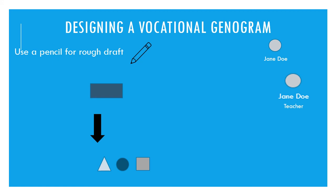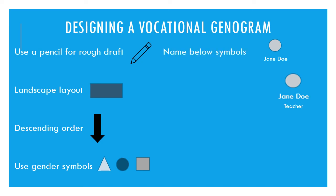Designing a vocational genogram can be simple and should be approached from a rough draft mindset, which is why using pencil or chalk is ideal. A landscape layout works well. Generations are listed in descending order from oldest to most recent using gender symbols. Write each person's name below their symbol along with their highest grade level and profession. Use lines to designate the connections between people, and include any other relevant information.